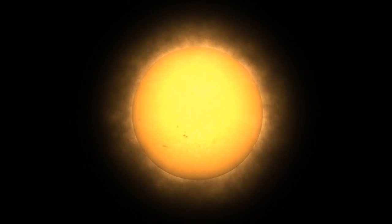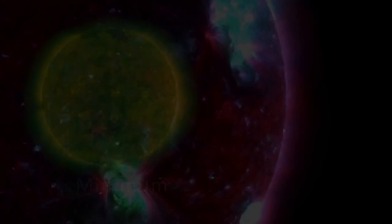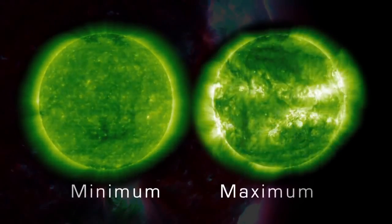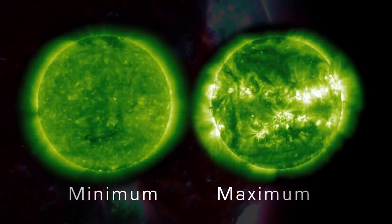During one cycle, the number of sunspots, a good indicator of solar activity, goes from low to high and back down to low. Solar minimum represents a period of time when sunspot numbers are relatively low, and solar maximum represents a period when sunspot numbers are relatively high.